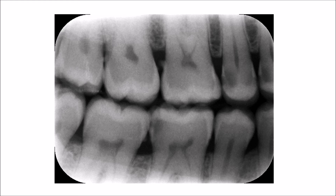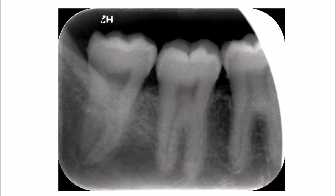These appear as triangular projections where the base of the triangle is attached to the tooth surface, while the apex of that radiopaque triangle is directed outwards. As you can see in this bitewing radiograph of the premolars and molars, there is a typically triangular radiopaque projection located at the distal surface of the first molar.